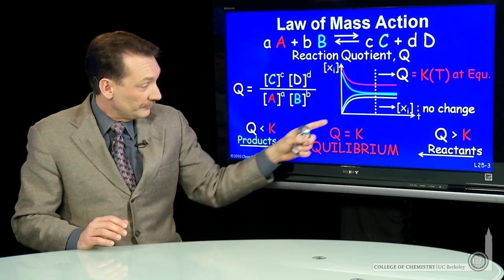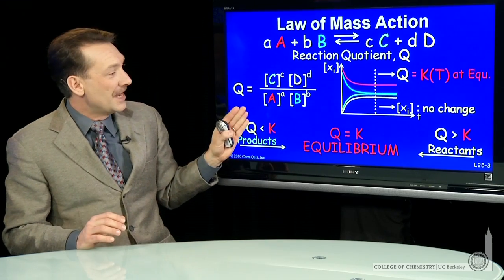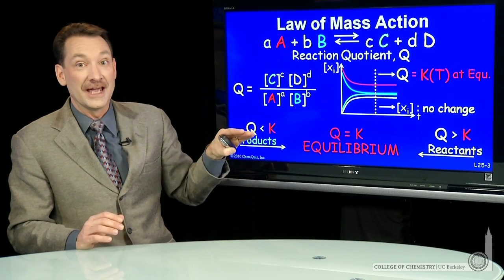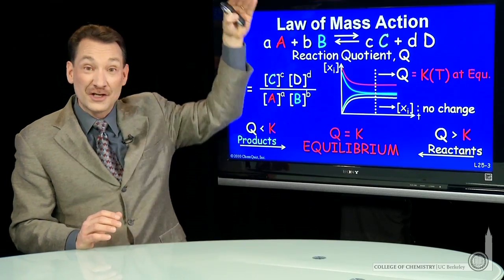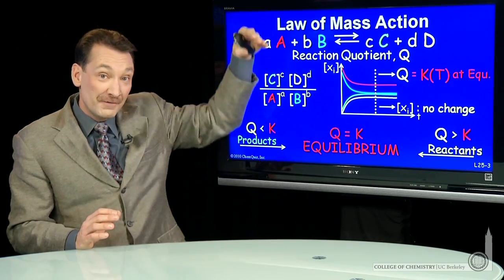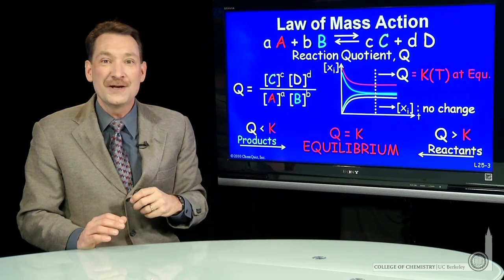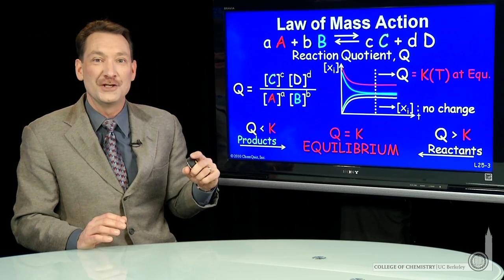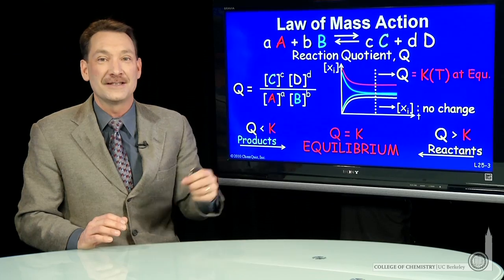So here we have Q equals K at equilibrium. Now, the approach from Q to K can be monotonic, as I've written it. But it actually could also oscillate. Whatever it is, it'll get to K eventually. So Q equals K at equilibrium. And comparison between Q and K will tell me which direction I have to go to get to equilibrium.